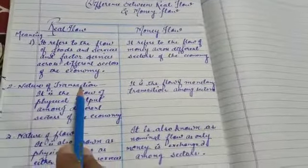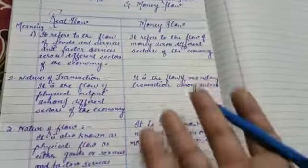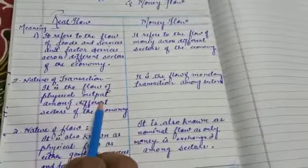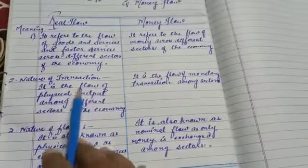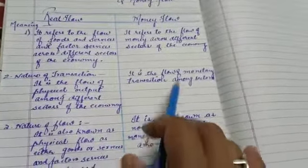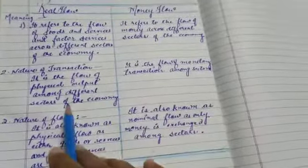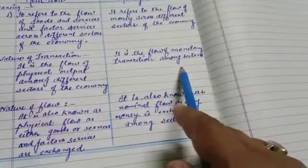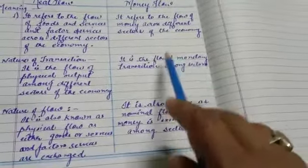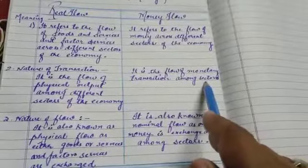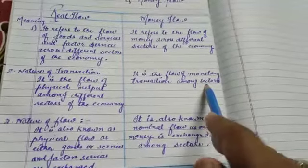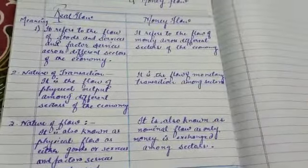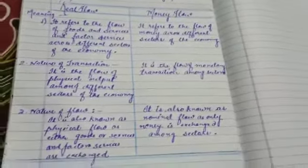Nature of transaction means which things are exchanged. In real flow, what is exchanged is physical output — factor services from household to business, and goods and services from business to household. Money flow, on the other hand, is the flow of monetary transactions among sectors — in the form of factor payment from business to households, and consumption expenditure from household to business.